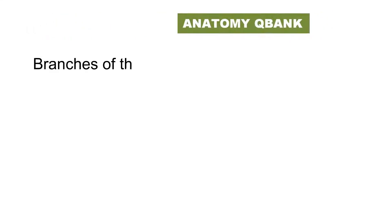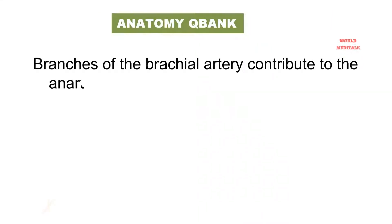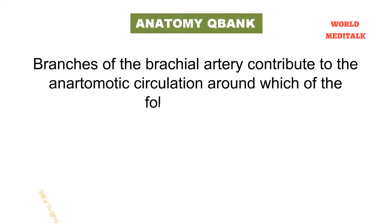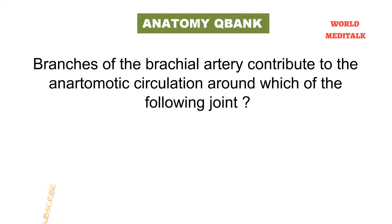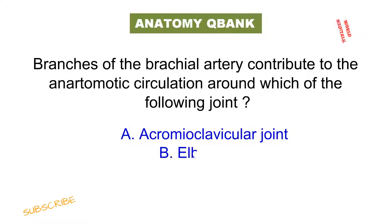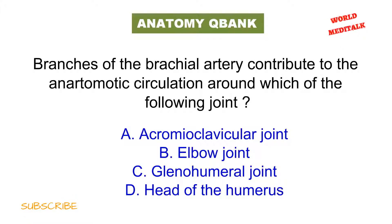Branches of the brachial artery contribute to the anastomosis of the circulation around which of the following joints? The options are: acromioclavicular joint, elbow joint, glenohumeral joint, or head of the humerus.